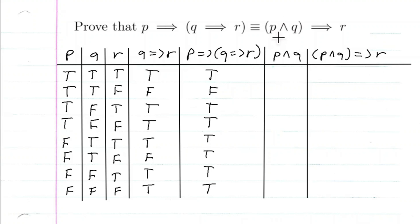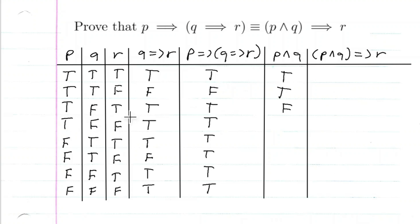Now let's find P and Q. Remember, for P and Q, both P and Q must be true for the proposition P and Q to be true. So: true and true is true, true and true is true, true and false is false, true and false is false, false and true is false — and the rest are false as well.